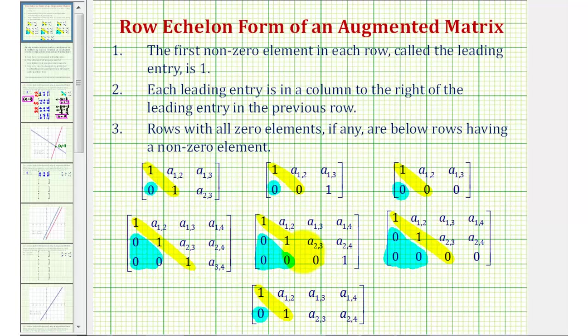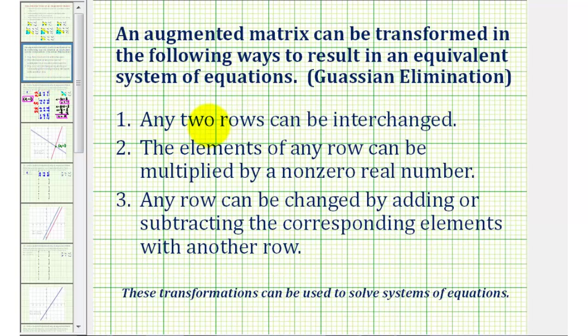The way we transform a matrix into row echelon form is to perform a process called Gaussian elimination, which means any two rows can be interchanged, the elements of any row can be multiplied by a non-zero real number, and any row can be changed by adding or subtracting the corresponding elements with another row.